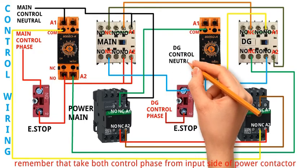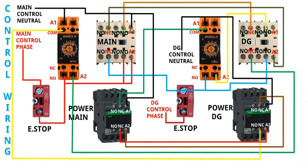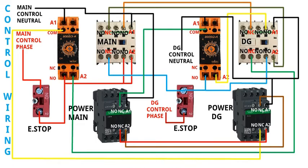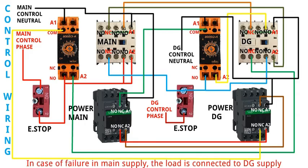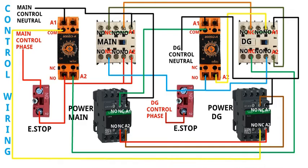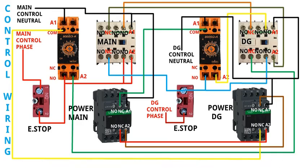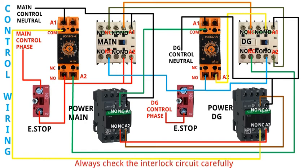Always remember to take both control phases from the input side of the power contactor. Our control wiring is complete. When the main supply is on, the load is connected to main supply. In case of failure of main supply, the load is connected to DG supply. Both on-delay timers are used to create a time gap between changeovers. Always keep both mains and generator supplies separate in the control wiring, and always check the interlock circuit carefully.